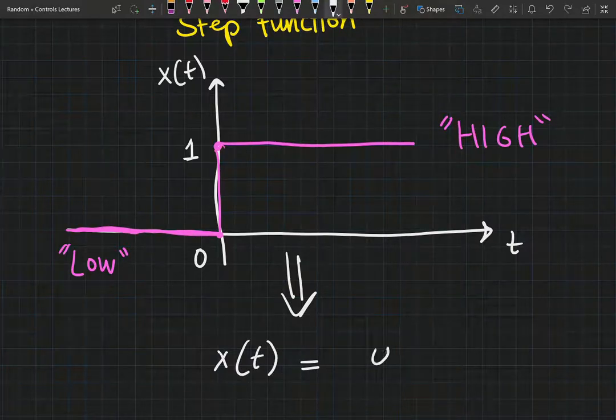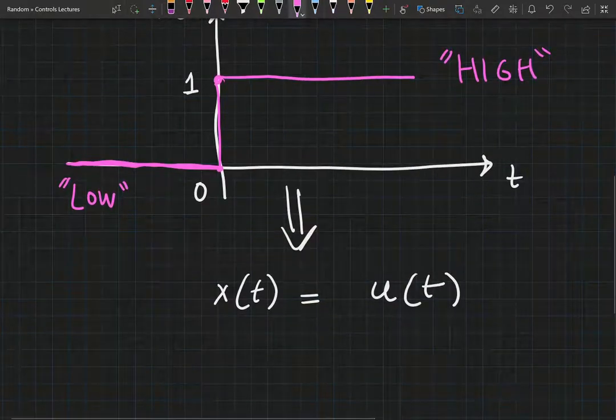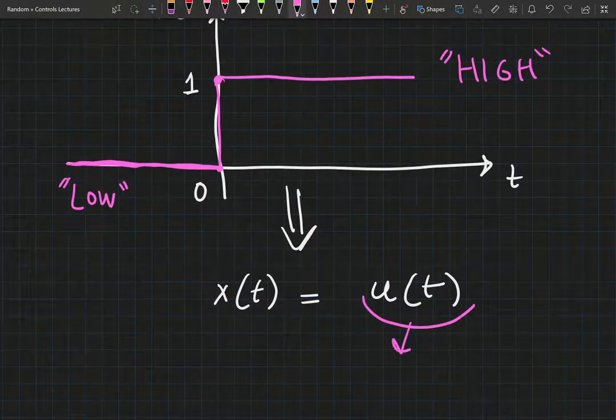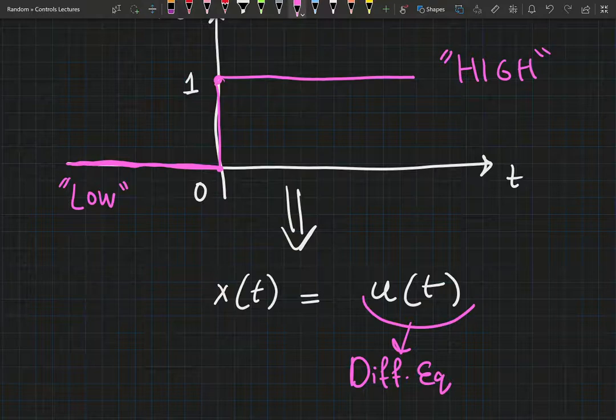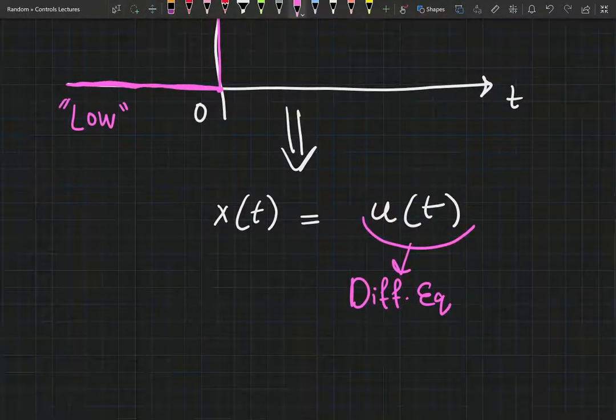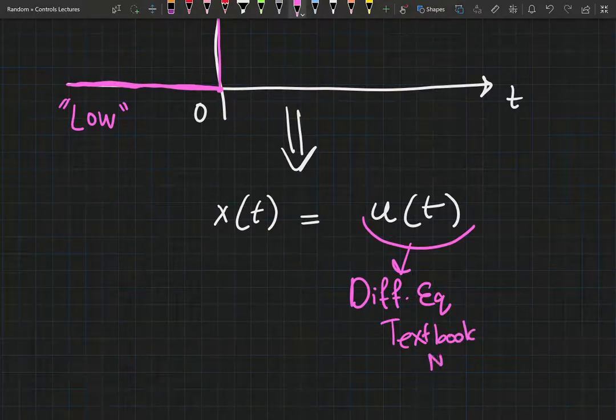It shall be written as u of t. This is the notation used in most differential equations textbooks. Most textbooks are going to use u of t. And when they say u of t, they just mean the step function or the Heaviside function.